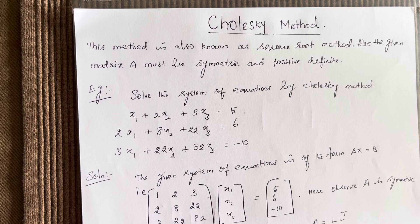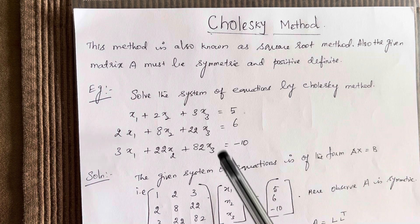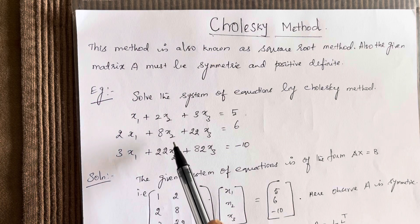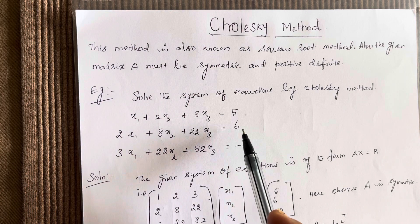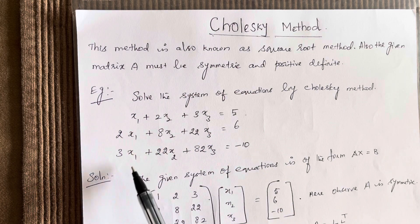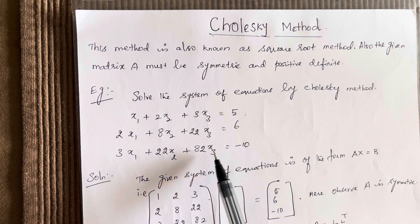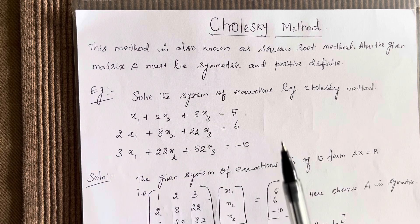Let us see an example. Solve the system of equations by the Cholesky method. The equations are: x1 plus 2x2 plus 3x3 is equal to 5, and 2x1 plus 8x2 plus 22x3 is equal to 6, and 3x1 plus 22x2 plus 82x3 is equal to minus 10.